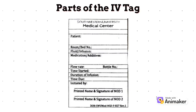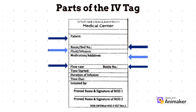The parts of the IV tag include the patient's name, the room or bed number, the name of the fluid or infusion ordered such as D5LR or PNSS, the medication or additives to the fluid such as oxytocin, the flow rate of the IV fluid, the bottle number (first, second, and so on), the time the IVF is started, the duration of the infusion, the time when it is due, your name and the name of the other nurse on duty written down or using your name stamp, together with your signature.